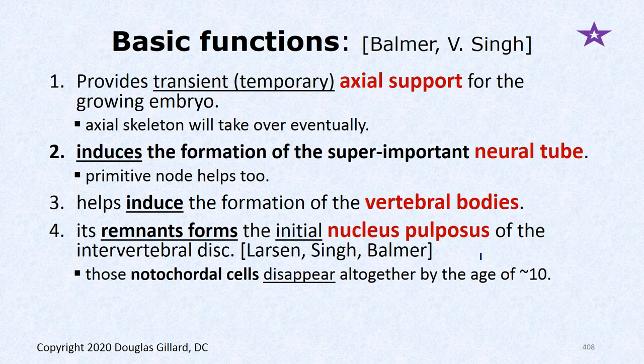Basic functions of the notochord: first, it's like a little temporary spine — the embryo is growing and needs central support, so it provides temporary axial support until the real spine forms. It also induces formation of the neural plate, which forms the neural tube, which becomes the spine. It induces the formation of vertebral bodies. And as noted, its remnants normally form the nucleus pulposus of the intervertebral disc, which persists until about age 10, then it's completely gone.